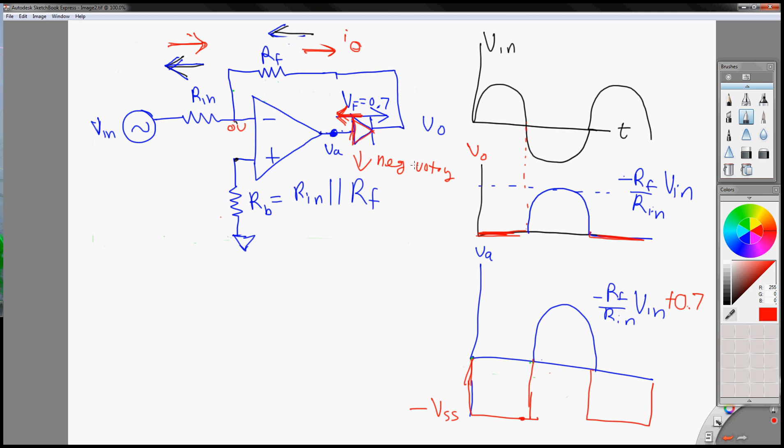Hey, so last time we talked about how to design the half-wave rectifier. But the problem with this design is that during the positive cycle, our output is at minus Vsubs.